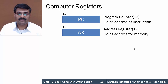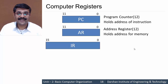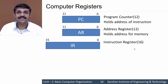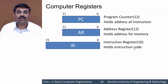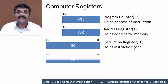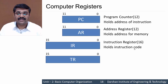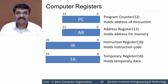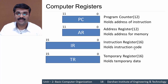Next we have IR, which is of size 16 bits. IR stands for Instruction Register and this register holds the instruction code. Then we have TR — Temporary Register — which is also of size 16 bits. It holds the temporary data generated during certain micro operations carried out.